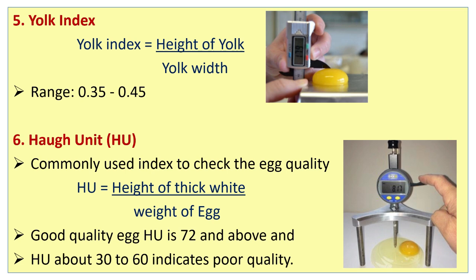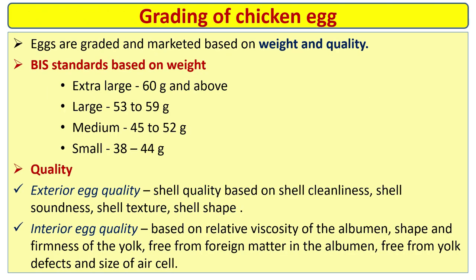Haugh unit is a commonly used index to check egg quality. It is calculated as height of thick white divided by weight of egg. Good quality egg Haugh unit is 72 and above; a Haugh unit of 30 to 60 indicates poor quality of egg.